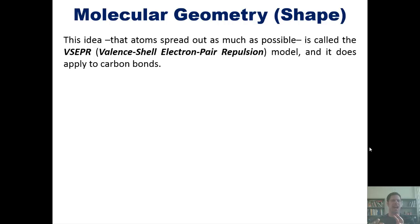Now, this idea, the idea that atoms spread out as much as possible and as far away from each other, is called the VSEPR, or valence shell electron pair repulsion model. My high school chemistry teacher called it VSEPR, because it rolls off the tongue better. VSEPR. And it does apply to carbon bonds.